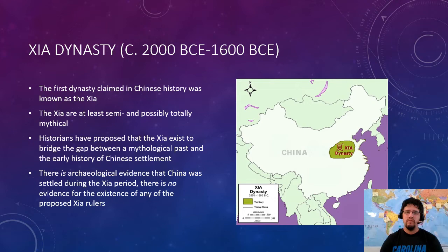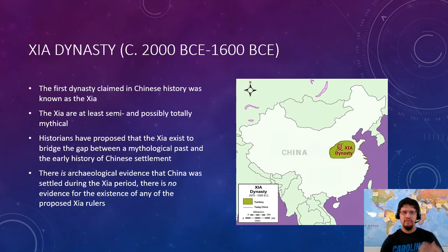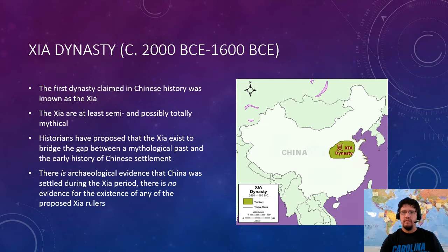The first dynasty in Chinese history is the Xia dynasty, referenced a lot but at least semi- and possibly totally mythical. You can see they're up in the Yellow River Valley. What you can put for this one is 'Xia dynasty — possibly mythical.' They exist, at least historians think, to bridge the gap between the mythological past of gods and monsters and the actual early history of Chinese settlement. There's no evidence that any of the Xia kings referenced in Chinese literature were actually real.